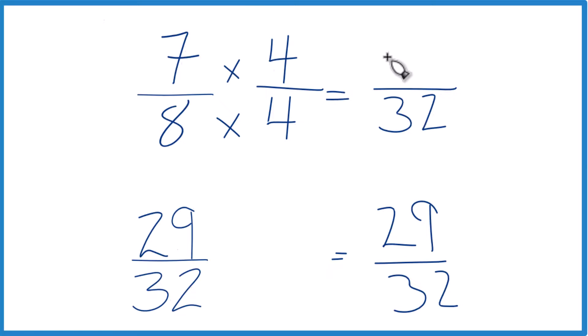7 times 4 is 28. Now we have the same denominator. Compare the numerators. 29 is greater than 28. So 29 32nds, that's greater than 28 32nds. Only by 1 32nd. So not very much, but it's still greater.